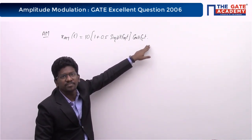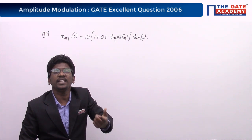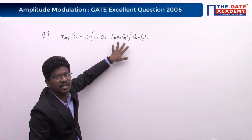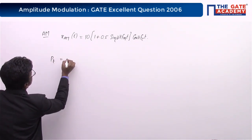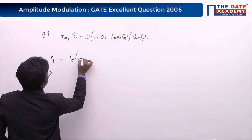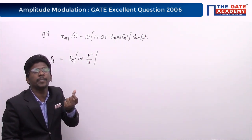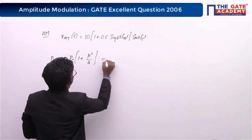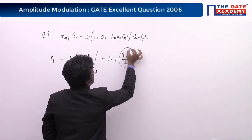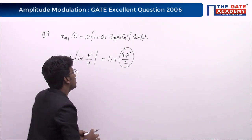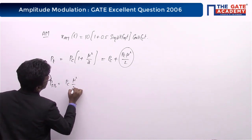The carrier signal is one part and the sidebands carry the message signal. The total power of an AM signal follows the formula: P_c × (1 + μ²/2). This total power contains two parts: the carrier power and the sideband power. What we need is the sideband power, which is P_c × μ²/2.